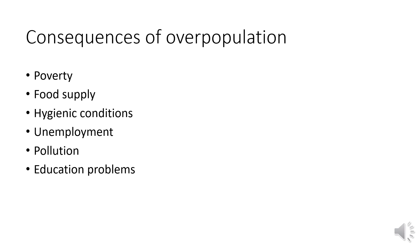The consequences of overpopulation affect not only national but also individual and family levels. First, poverty: if a family has more persons and less income, it becomes poor, with poverty increasing with every additional child. Next, food supply: population increase without a corresponding increase in food production leads to shortage. Hygienic conditions also worsen — more people living in a small area leads to accumulation of waste material that is not removed quickly.